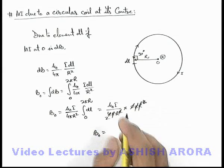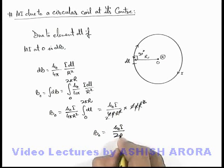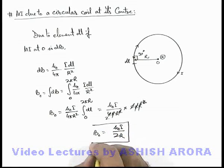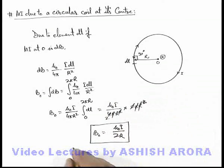So magnetic induction at point O we can write as μ₀i/2r. That is a result of magnetic induction at point O. This is for one turn of the coil.